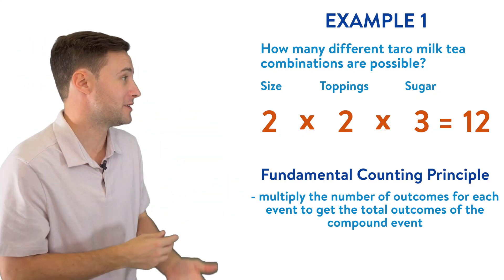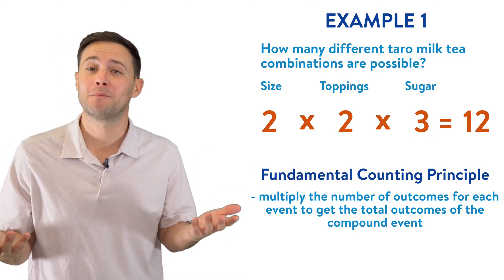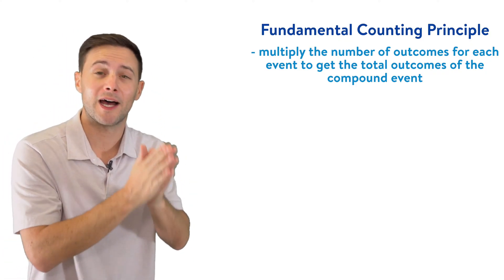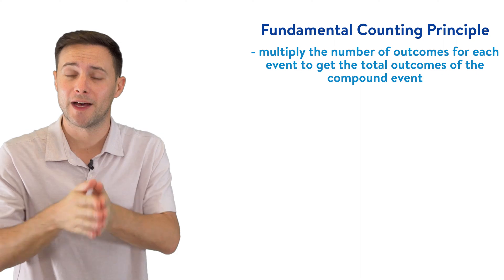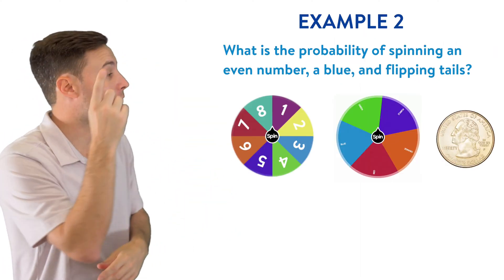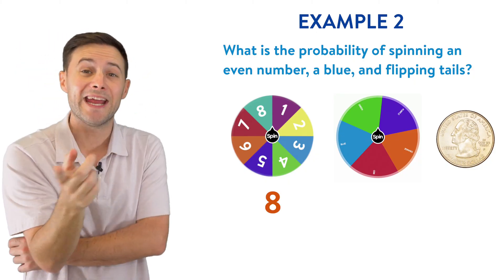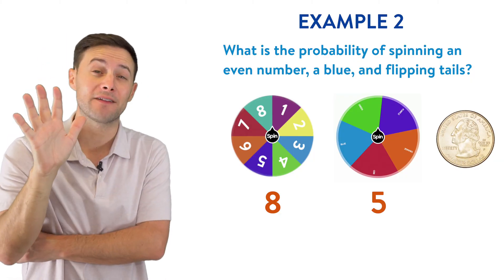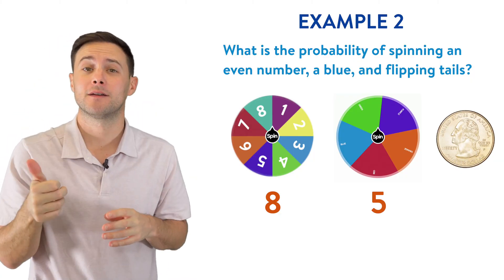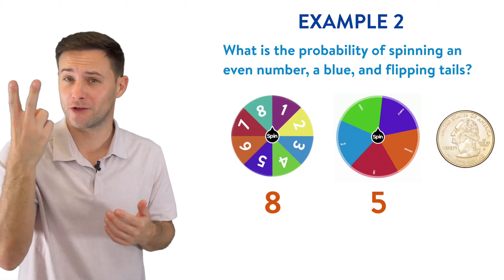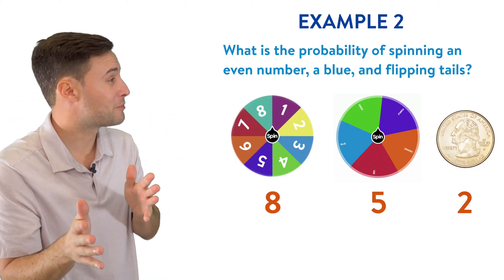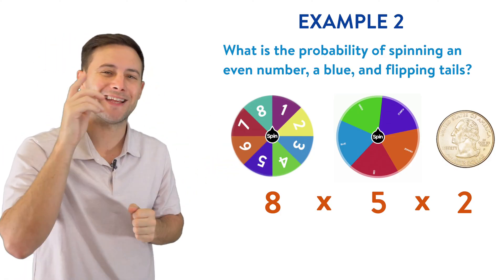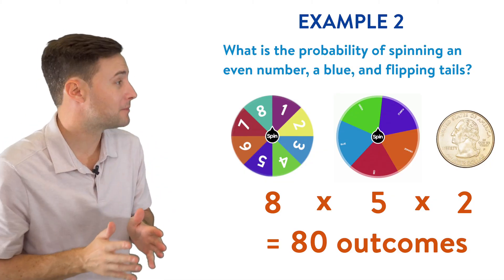So let's use that. That's actually called the fundamental counting principle, kind of a fancy name. But essentially, all it means is if you're trying to find the total possible outcomes for a compound event, just multiply the number of outcomes for each event together. So let's do that for this example. There's eight options on that first spinner, there's eight numbers, and then the colors, there's actually five different colors. And then flipping a coin, there's only tails or heads. So there's only two options for that. So if we use the fundamental counting principle, we can multiply all of those, eight times five is 40 times two is 80. So the total possible outcomes is going to be 80.